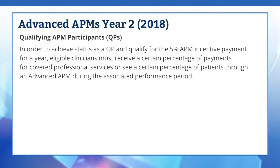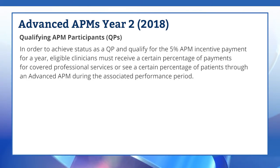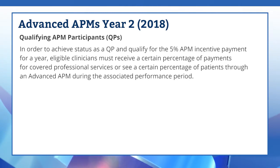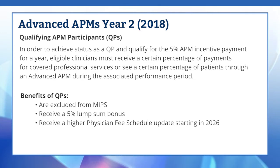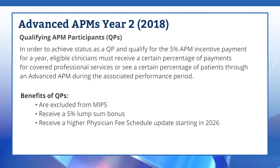In order to achieve status as a qualifying APM participant, or QP, and qualify for the 5% APM incentive payment for Year 2, eligible clinicians must receive a certain percentage of payments for covered professional services or see a certain percentage of patients through an Advanced APM during the 2018 performance period. For payment years 2019 through 2024, clinicians who meet the QP requirements are excluded from MIPS adjustments and receive a 5% lump sum incentive payment for their Part B professional services furnished during the calendar year immediately prior to the payment year. Qualifying APM participants will also receive a higher physician fee schedule update starting in 2026.